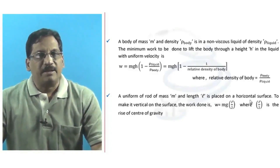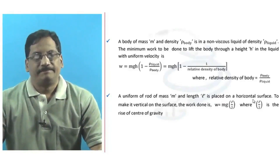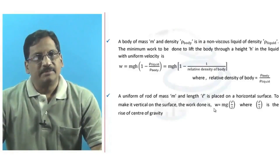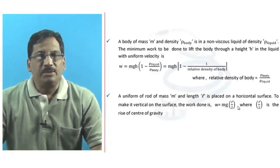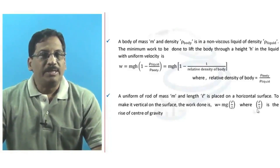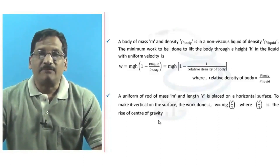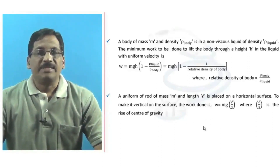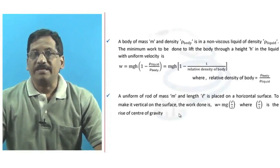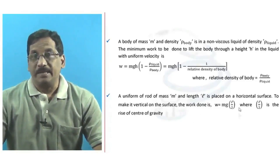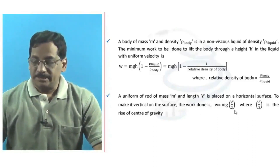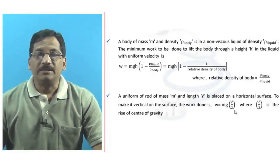To make the rod vertical on the surface, the work done is W = mg × (l/2), where l/2 is the rise of the center of gravity. When the rod is placed horizontally, the center of gravity is at the surface level. When made vertical, the center of gravity rises to a height l/2, so the work done is mg × (l/2).